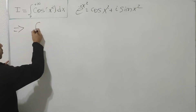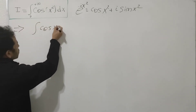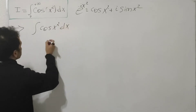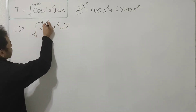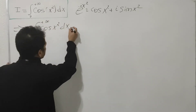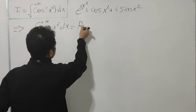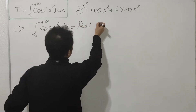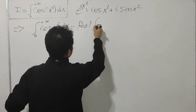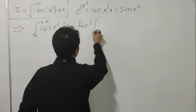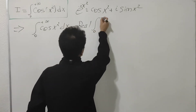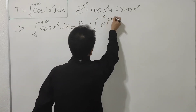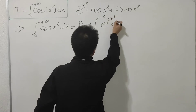The integral of cosine(x²) dx as x goes from zero to plus infinity equals the real part of the integral from zero to plus infinity of e^(ix²) dx.